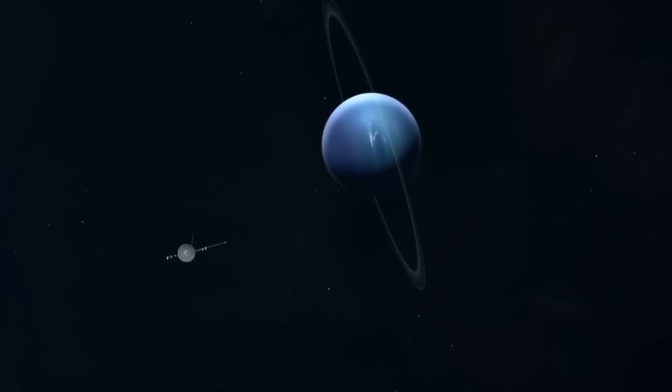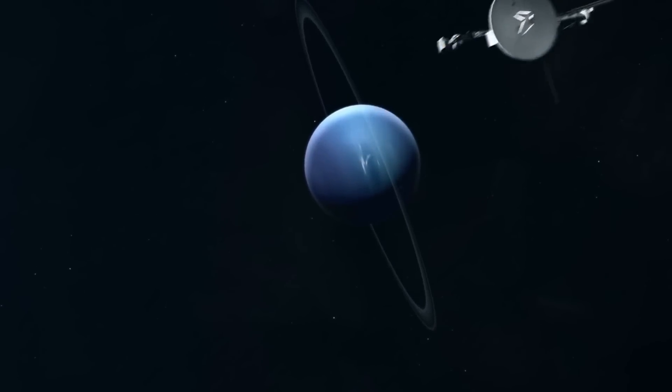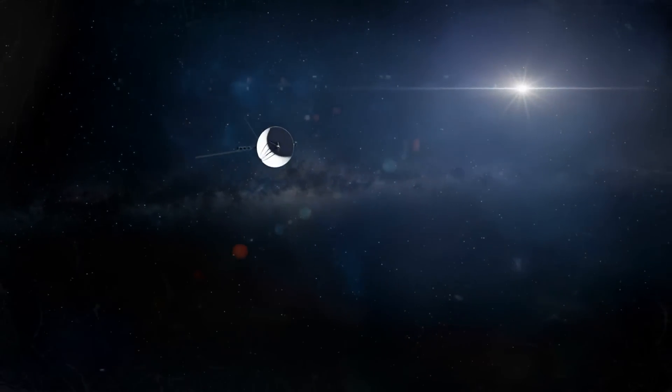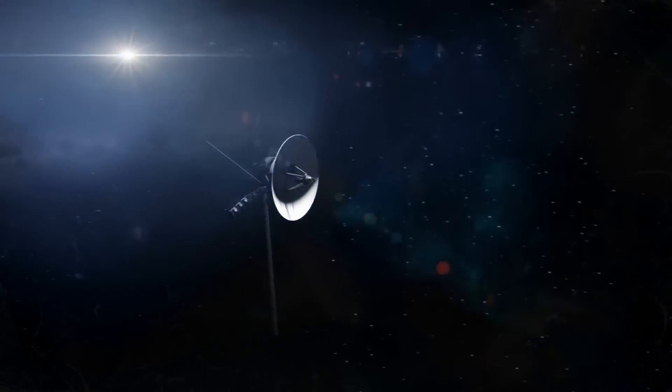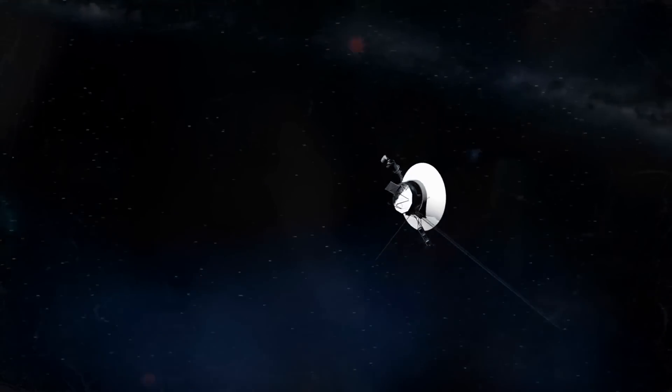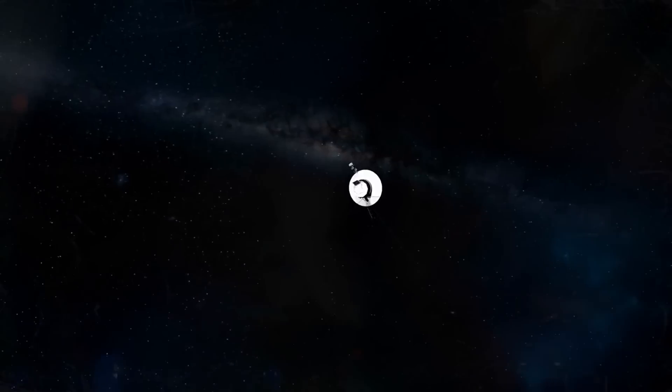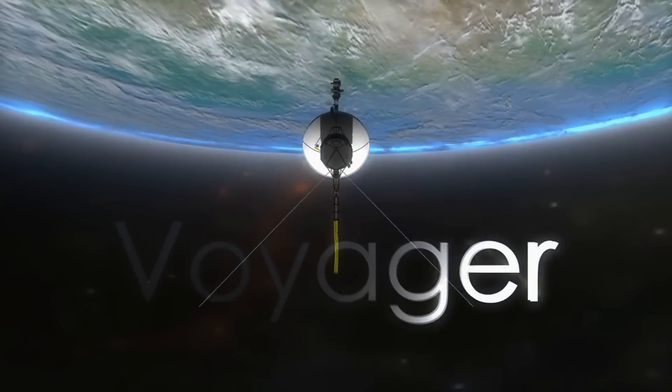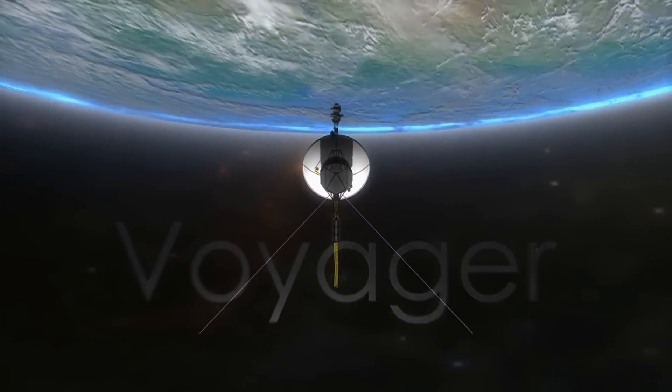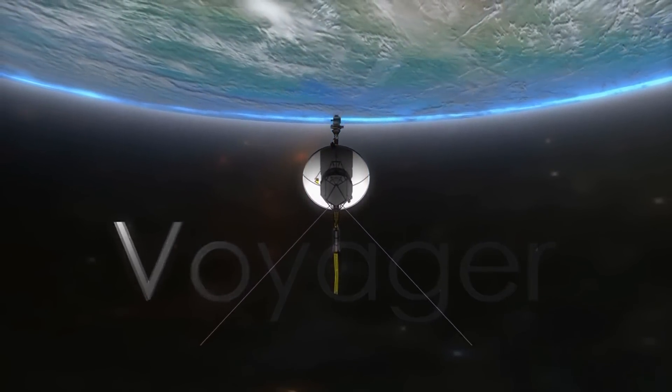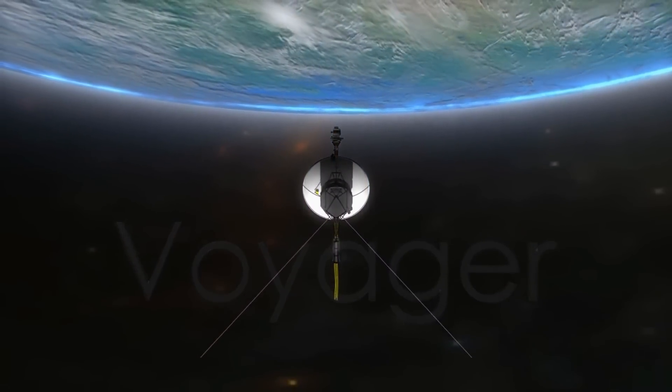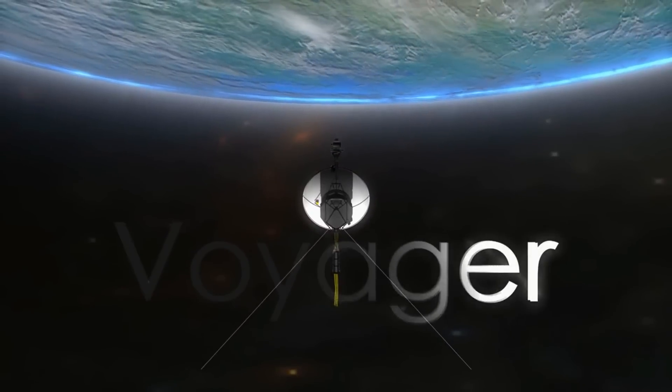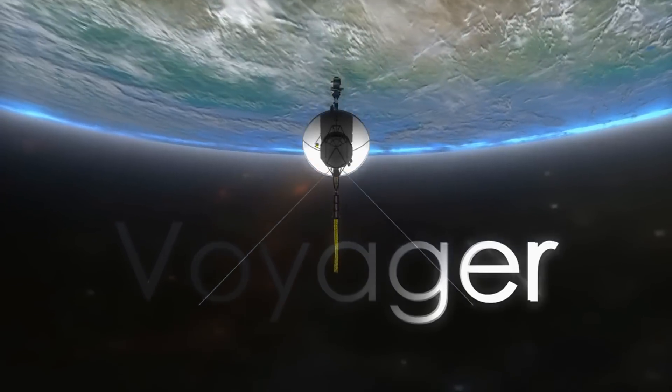Voyager 1's mission began in a time when the world was just starting to grasp the potential of space exploration. Launched on September 5, 1977, just 15 days after its twin Voyager 2, the spacecraft was equipped with cutting-edge technology at the time. Yet compared to today's standards, the technology on board Voyager 1 was rudimentary. Its computer system had just 69 kilobytes of memory, less than what we find in the simplest digital devices today.